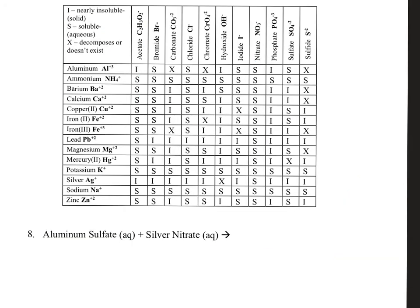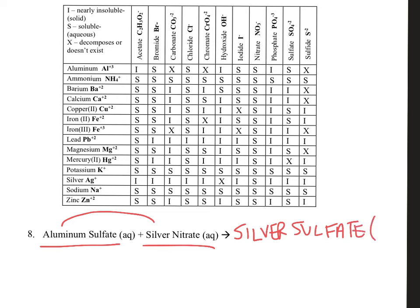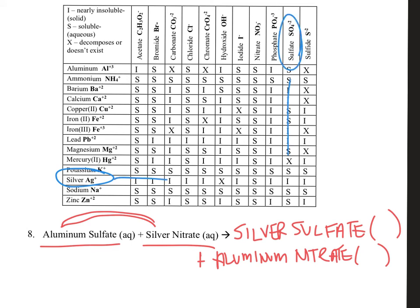We'll move on to the last one, number eight. We've got aluminum sulfate and silver nitrate. Silver and aluminum may potentially switch, which means silver — instead of being with nitrate — may link up with sulfate. Aluminum is going to potentially meet up with nitrate. Looking at the solubility chart for silver sulfate: here's silver, here's sulfate — and bingo, we got an I. I stands for insoluble, which means it's a solid. Aluminum nitrate most likely is going to be aqueous, and yes — it's an S, meaning soluble and aqueous.